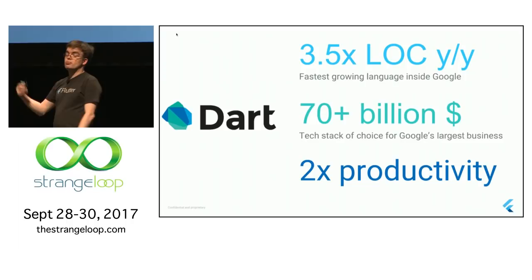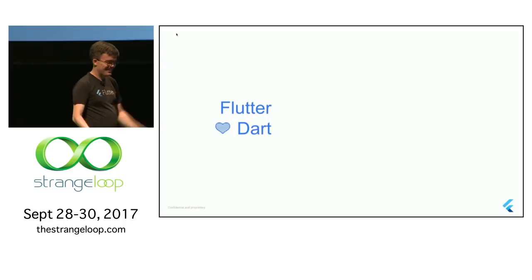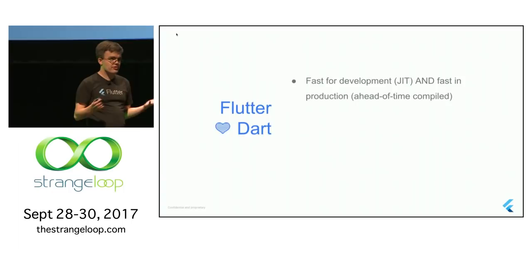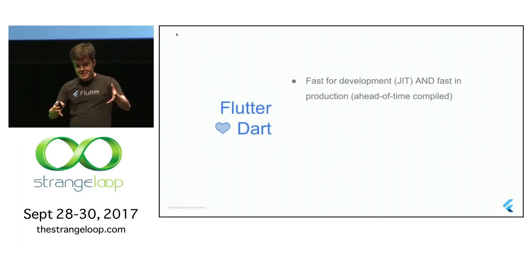We ended up really liking this decision. There are some neat things this language does. It both has a fast development cycle — which you've seen — and also when it's time to ship, it compiles straight to ARM code. You ship straight to the CPU, straight to the metal, to your users.